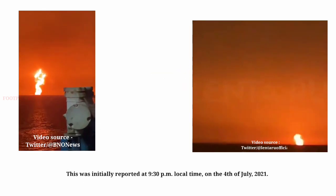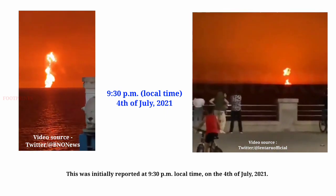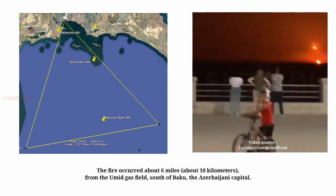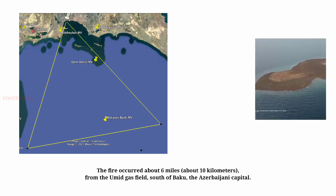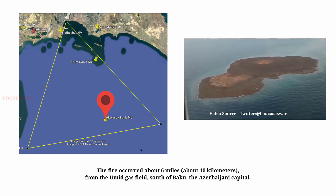This was initially reported at 9:30 p.m. local time on 4 July 2021. The fire occurred about 6 miles (about 10 kilometers) from the Umid gas field, south of Baku, the Azerbaijani capital.